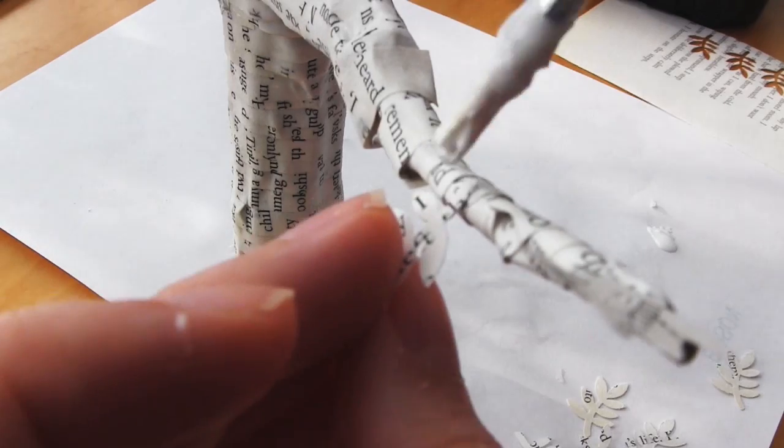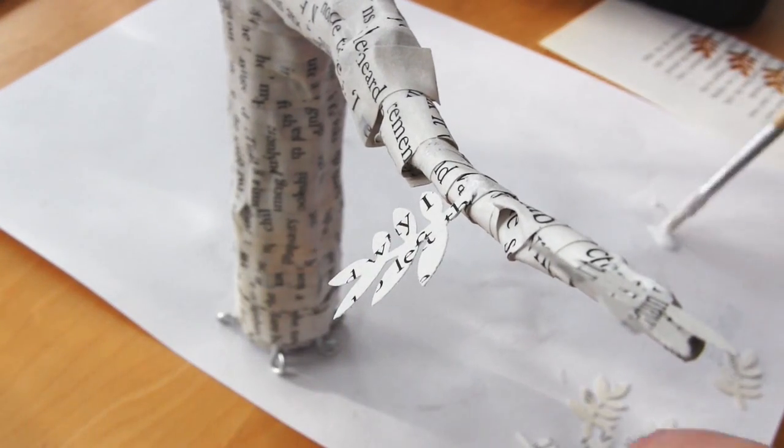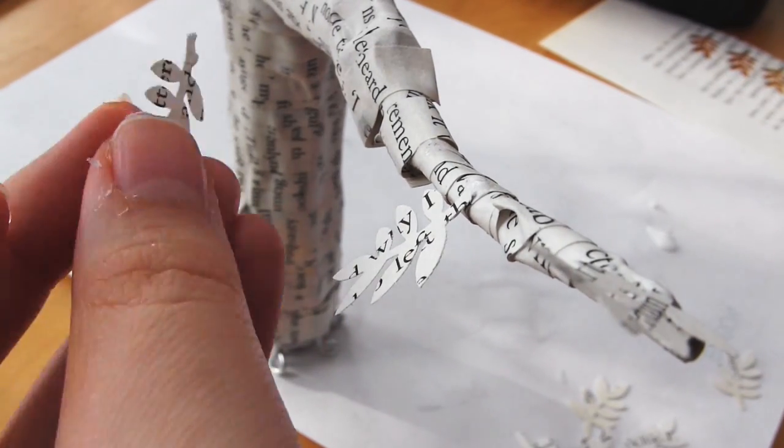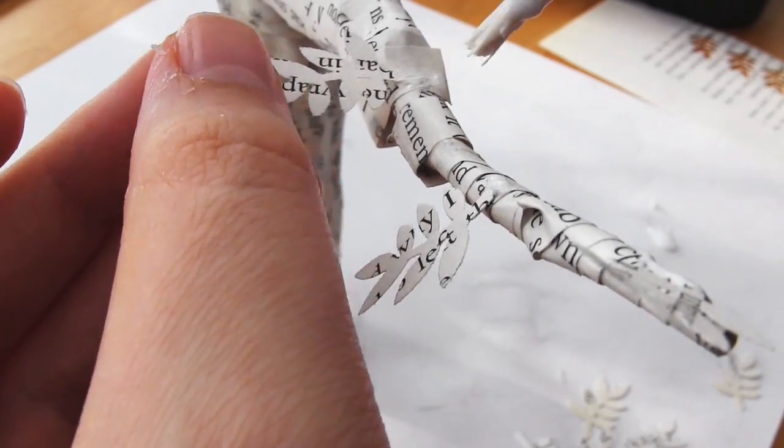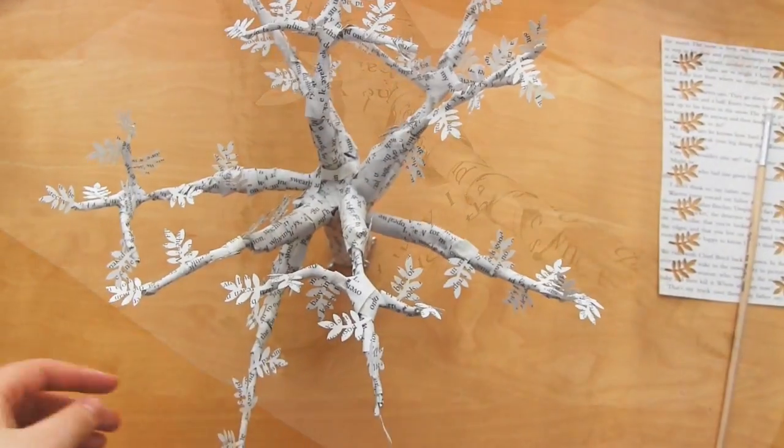I then use my paint brush just to add a little bit of glue to the stem of each leaf and position it on the tree. You don't actually need much glue to hold them in place.